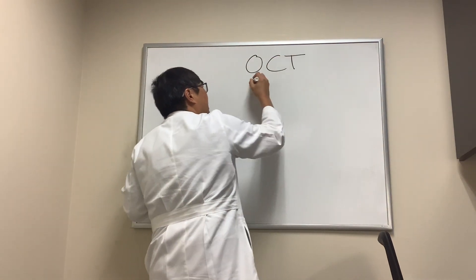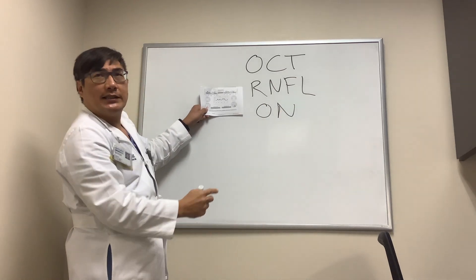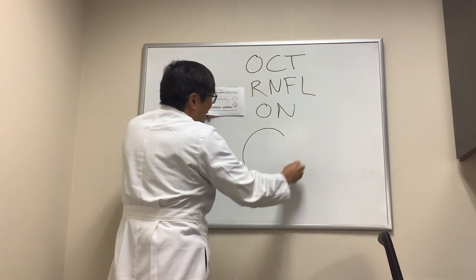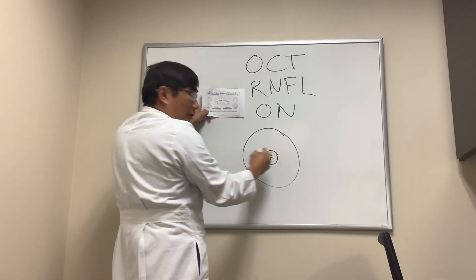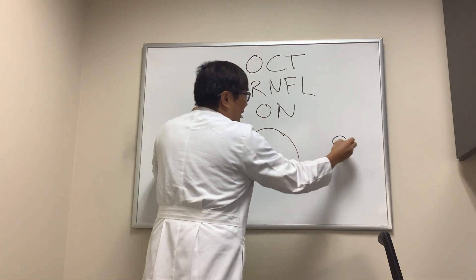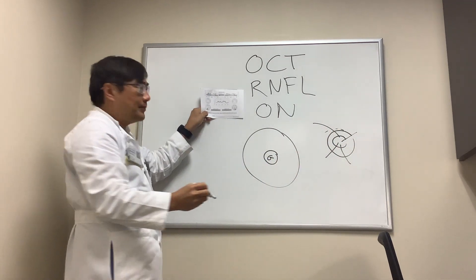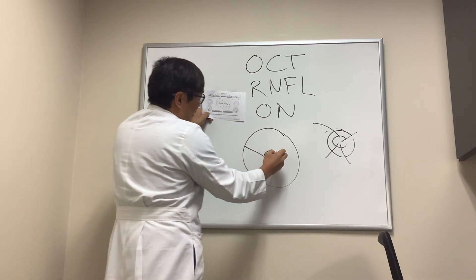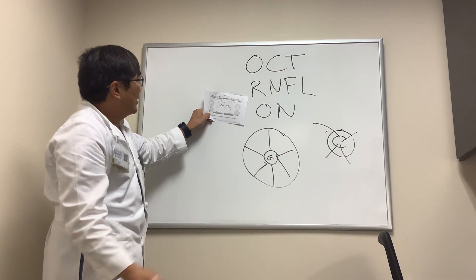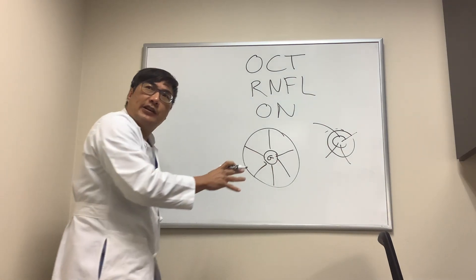Someone asked about OCT of the retinal nerve fiber layer of the optic nerve. Here's a picture of an OCT — at the bottom is a pie, and in the center of the pie is what we call the global number, which is the global measurement of the nerve fiber layer. The OCT is a line scan taking a measurement in a circle of the peripapillary nerve fiber layer, giving us quadrants — little pieces of pie — where each sector has a nerve fiber layer value and is color-coded: green is good, yellow is borderline, red is bad.